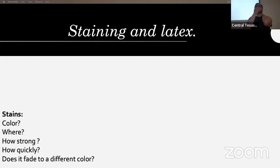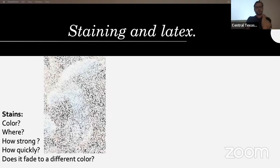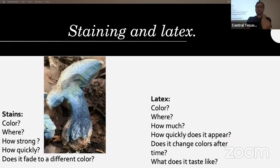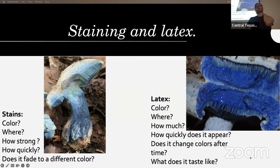If you have something like a Lactarius or certain Amanita that will stain, you want to note what color it's staining, where on the fruit body, how strong, how quickly, and whether it fades to a different color. Pretty much all of those can be applied to the latex as well — there is latex that when you slice a mushroom comes out white or clear and then turns yellow or pink. Tasting a little bit of the latex is never going to make you sick, and it can be very helpful in figuring out what you have.